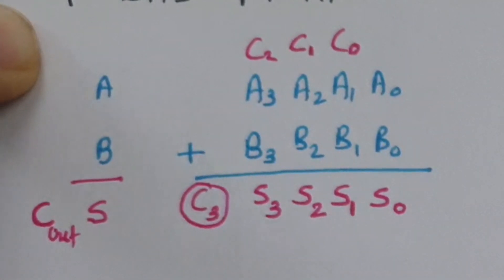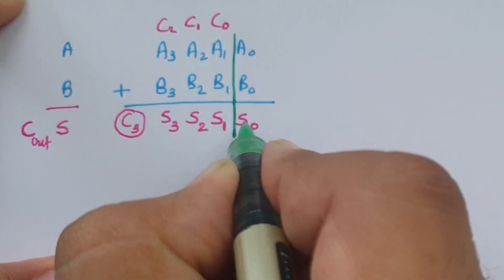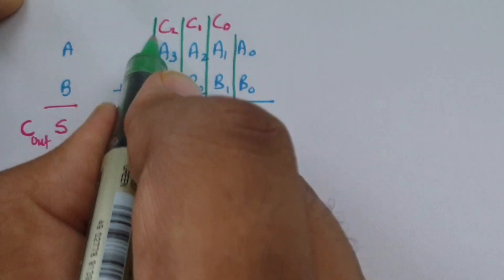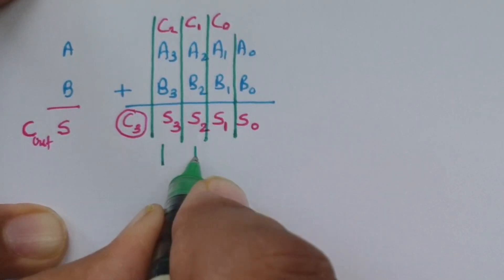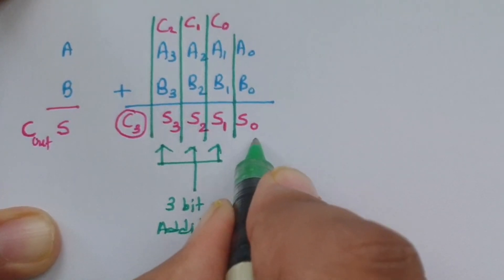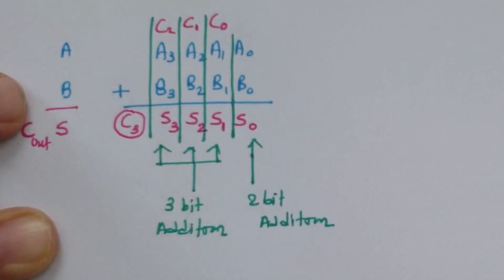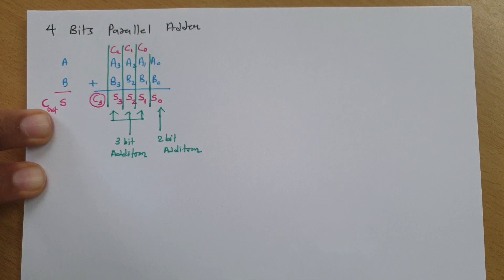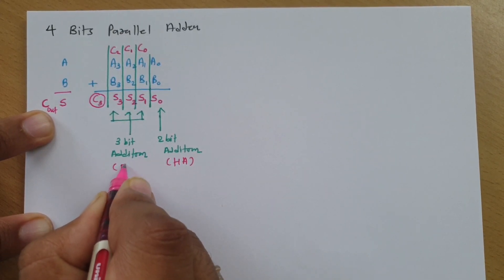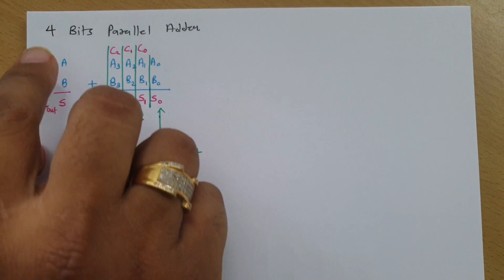If you observe this operation carefully, all we are doing is a 2-bit addition at the first stage, and then three 3-bit additions after that. Based on my previous videos on half adder and full adder: the half adder handles 2-bit addition, and the full adder handles 3-bit addition. By combining these two operations, we can perform the 4-bit parallel adder.